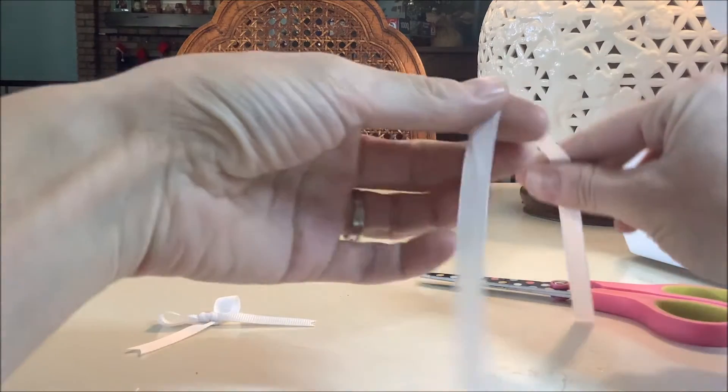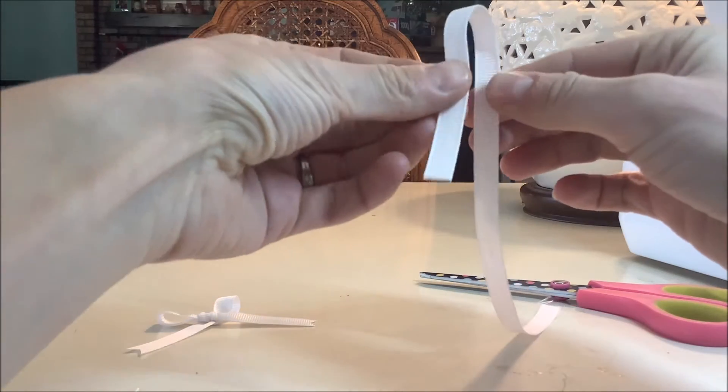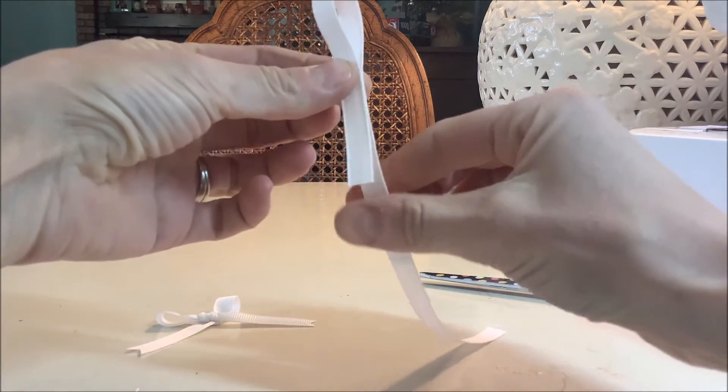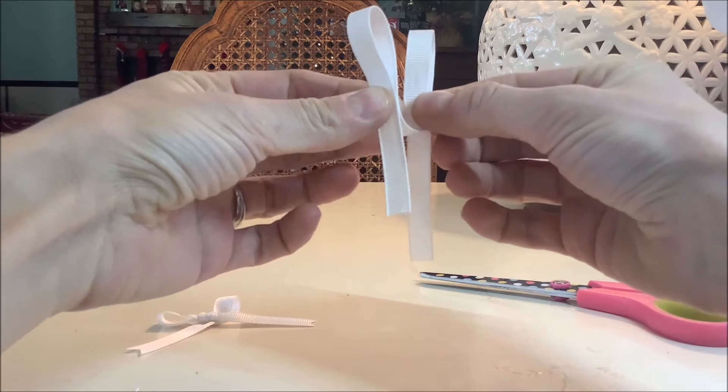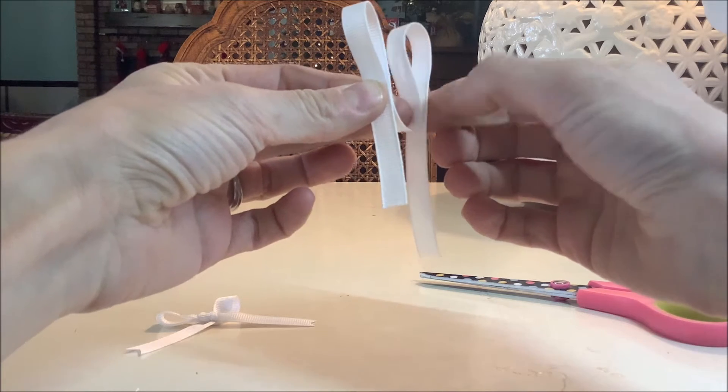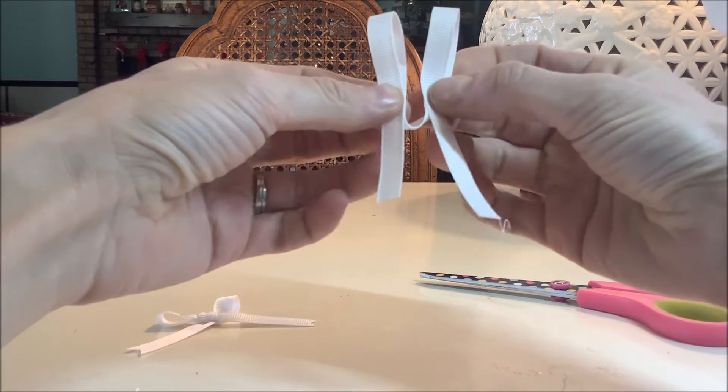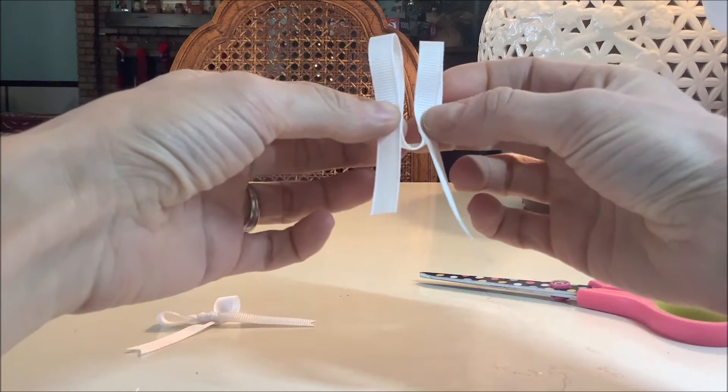First thing I'm going to do is make a loop, make a second loop. So I have two loops here. I'm going to turn the second one toward me so that both ends are in the front.